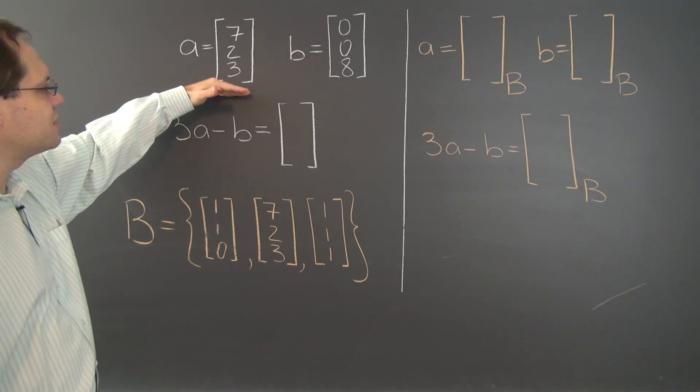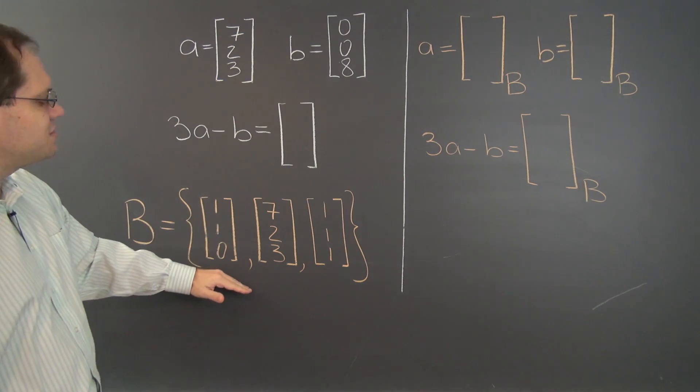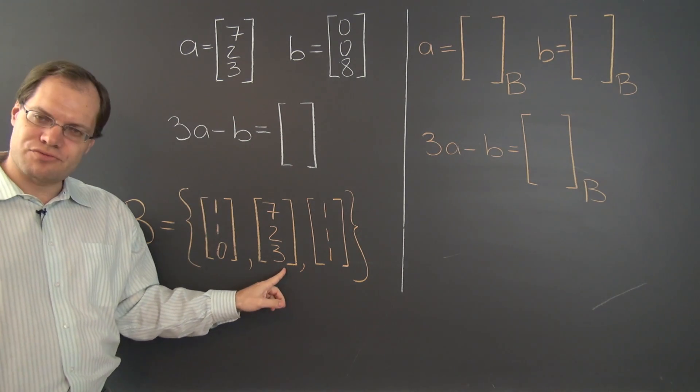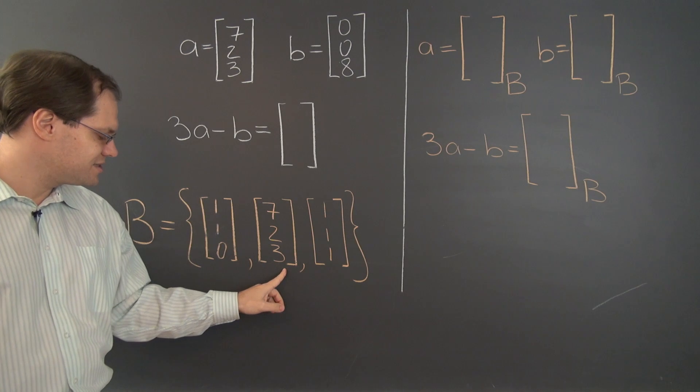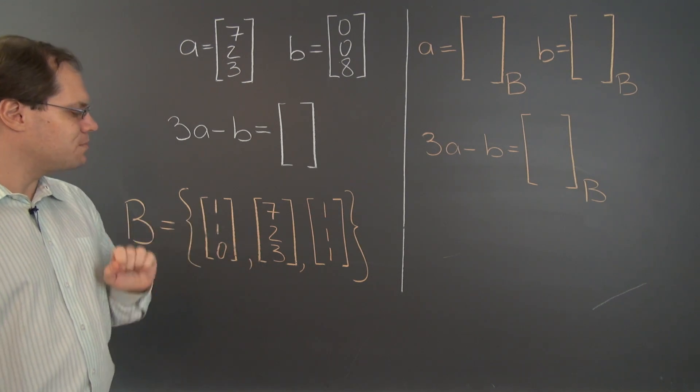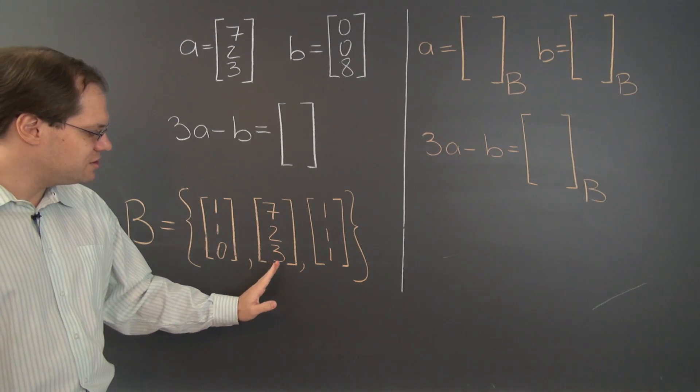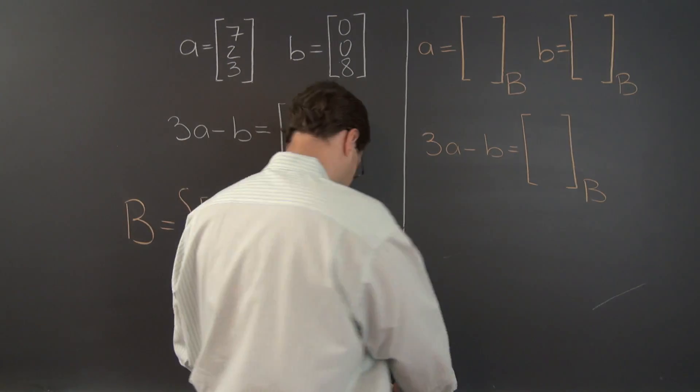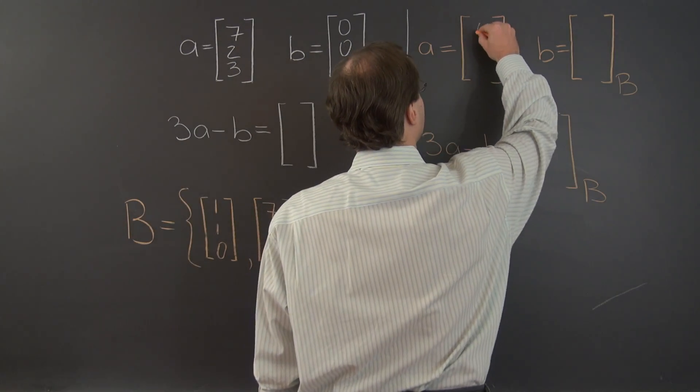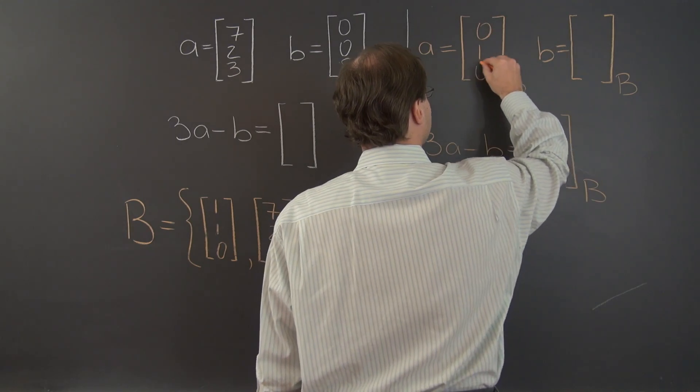So we have to decompose the vector A with respect to this basis and because I threw the vector A into the basis itself the components are very easy to find and they are of course 0, 1, and 0.